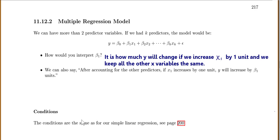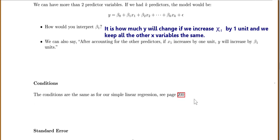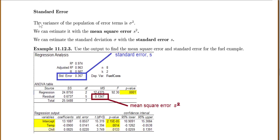Conditions for our multiple regression model are very similar to when we did just our basic one x variable linear regression. You can see page 200 if you want to look at those again. The standard error shows up in a few different places on our chart. You're used to looking at estimating the standard deviation — this is the standard deviation for all the residuals, with the standard error S, or it's the population of the residuals.